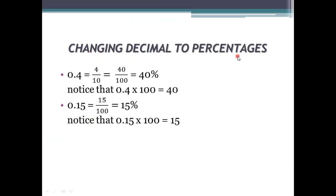Next is changing decimals to percentages. We know how to change percentages to decimals. Now, how do you change a decimal to a percentage? For example, 0.4 means 4 by 10, which equals 40 by 100, so 40 percent. Notice that 0.4 times 100 equals 40.